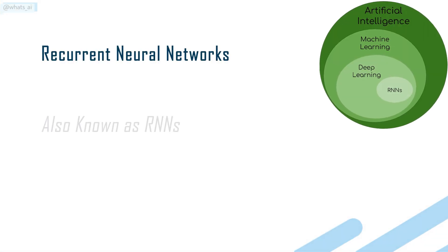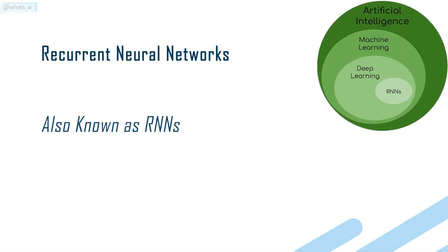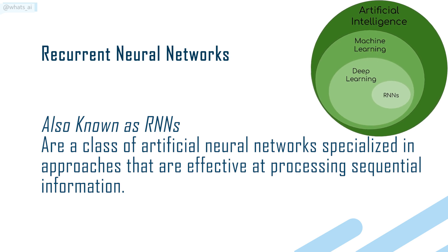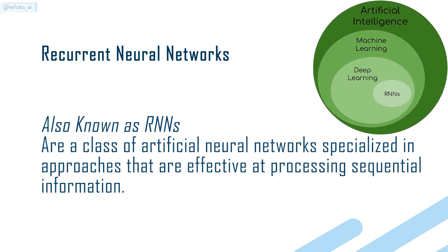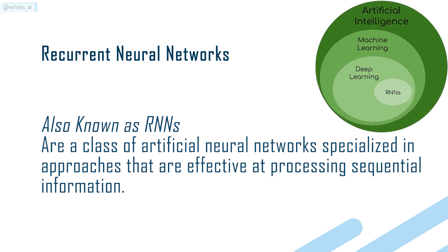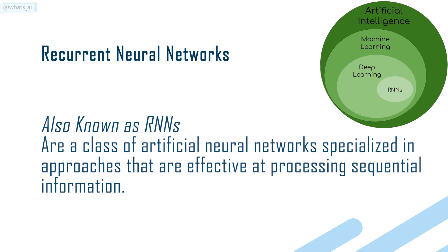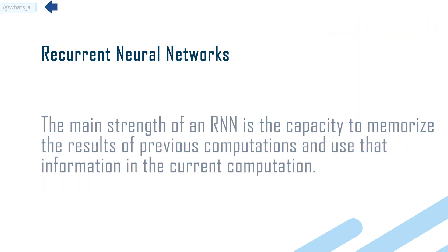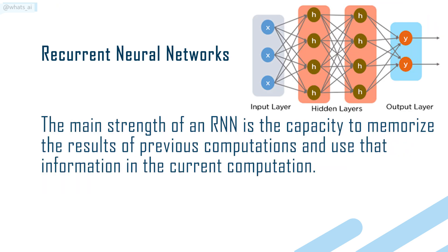Recurrent neural networks, also known as RNNs, are a class of artificial neural networks specialized in approaches that are effective at processing sequential information. The main strength of an RNN is the capacity to memorize the results of previous computations and use that information in the current computation.